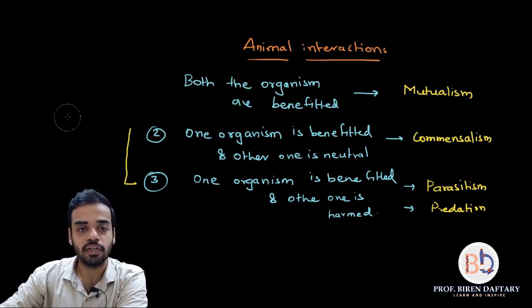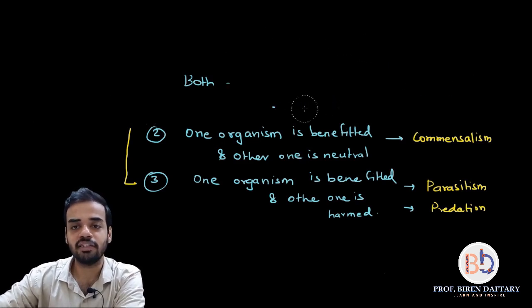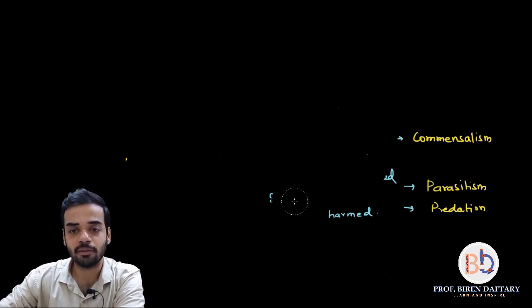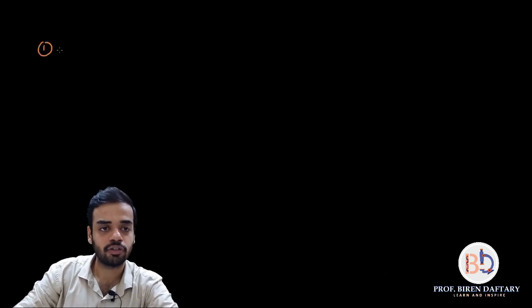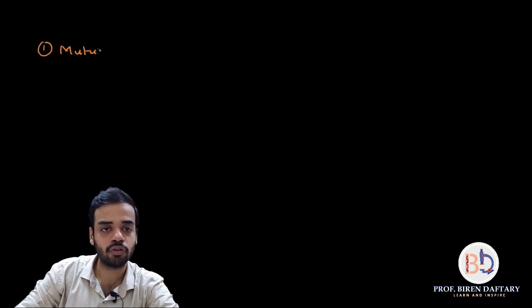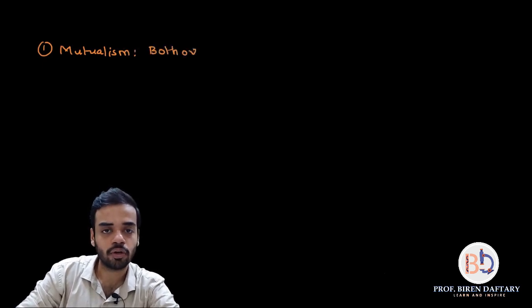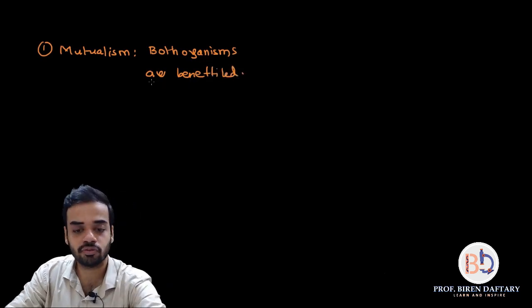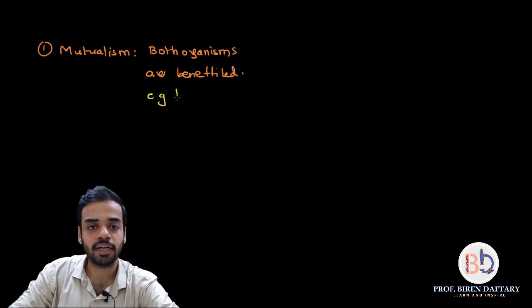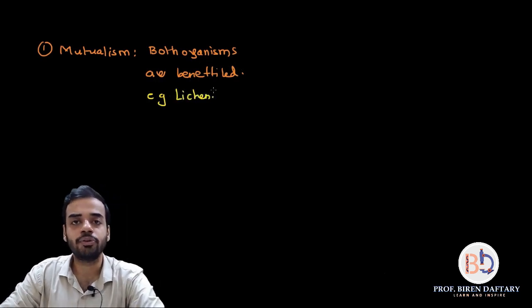Now let's start with the first type, mutualism. Mutualism is the relationship in which both organisms are benefited. The best example of this is lichens — I have already made a video on lichens which you can find in the pop-up window on the right-hand side of your screen.